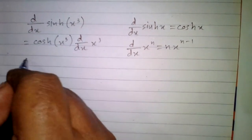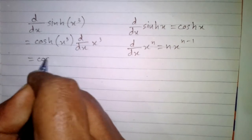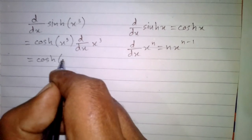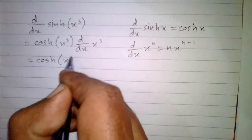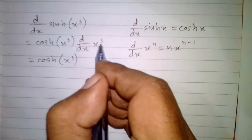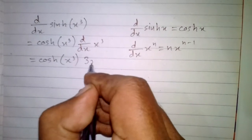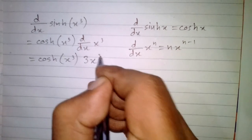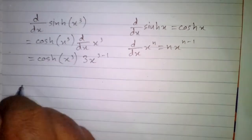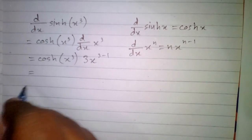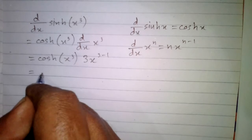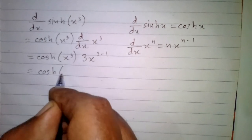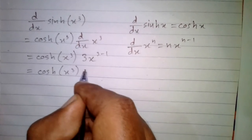So we will write hyperbolic cos of x cube as it is, and this 3 will become the coefficient of x, and we subtract 1 from 3. This will be equal to hyperbolic cos of x cube multiplied by 3x square.